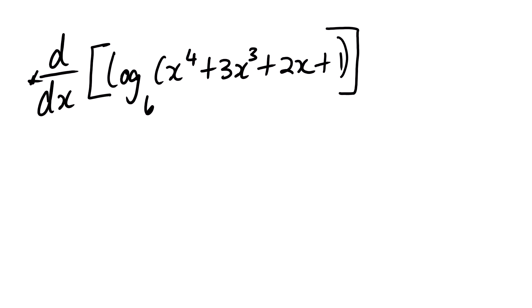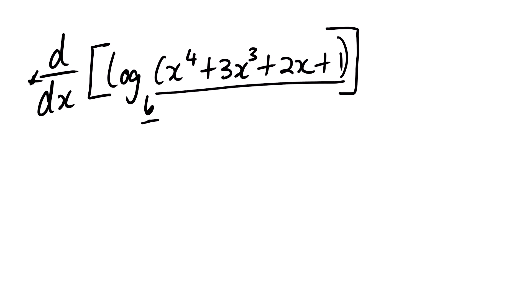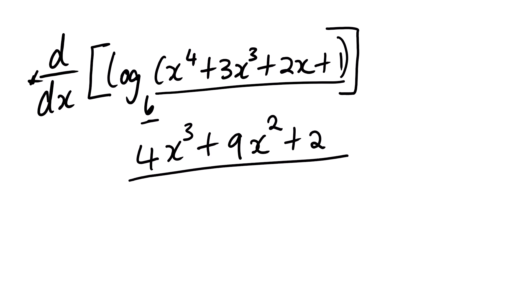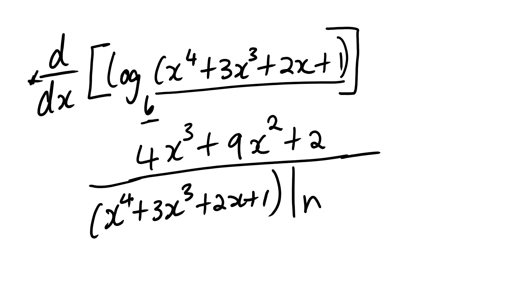Let us look at this example: the derivative of log base 6 of (x⁴ + 3x³ + 2x + 1). Here b is 6 and the argument is x⁴ + 3x³ + 2x + 1. We find the derivative of the argument, which is 4x³ + 9x² + 2, divided by (x⁴ + 3x³ + 2x + 1) times ln 6. That is the derivative.